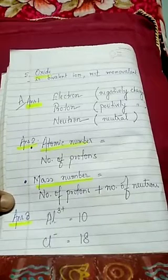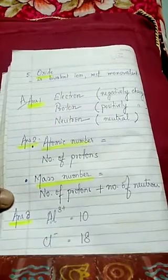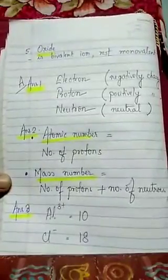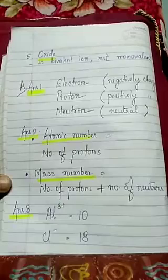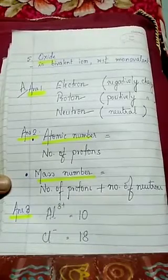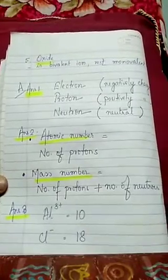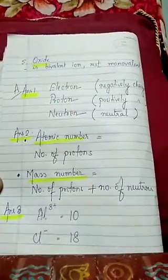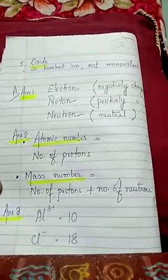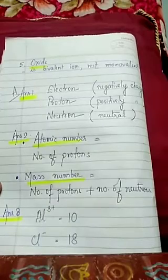Now move to the next, that is part A: answer the following questions. Question number 1: name the three fundamental particles present in an atom. The fundamental particles present in an atom are electron, proton, and neutron.